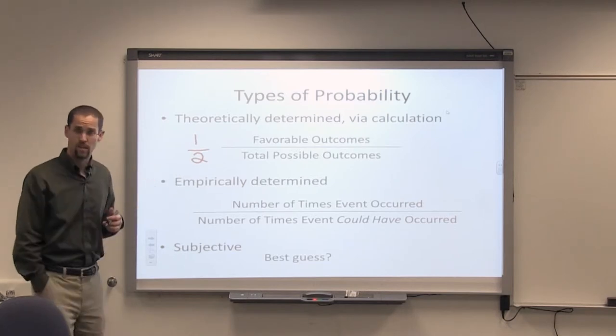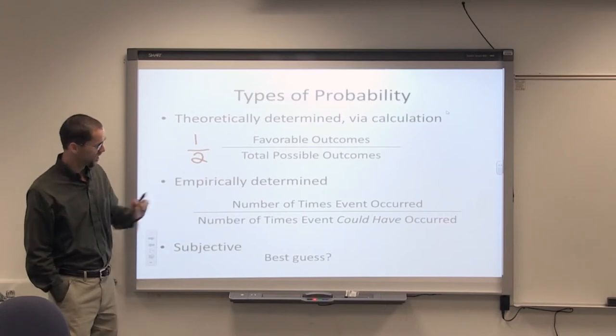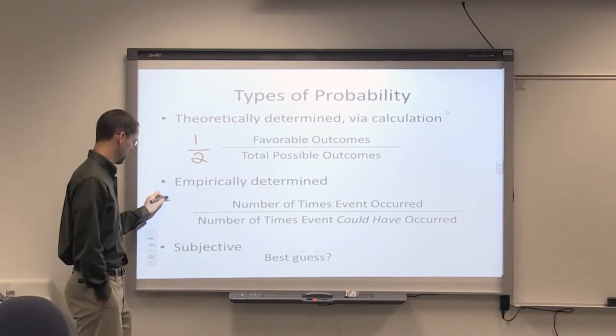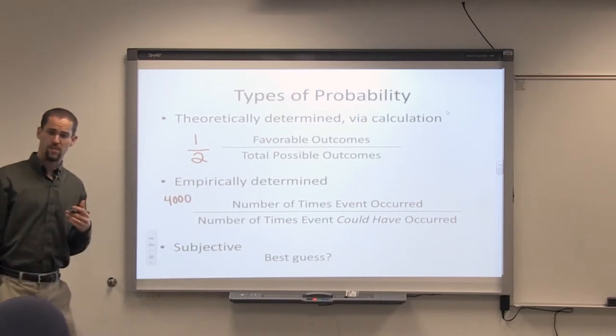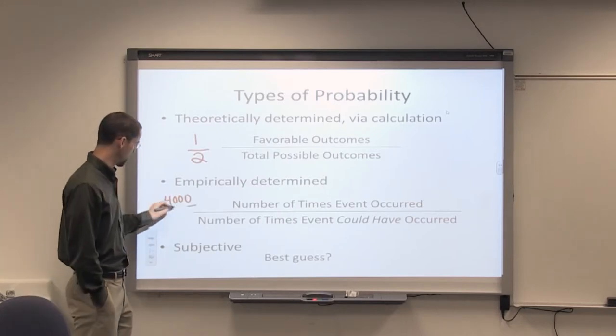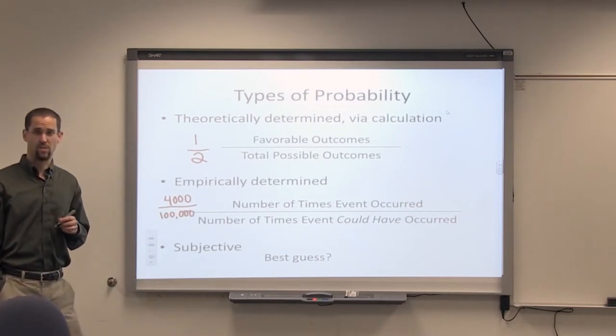Empirically determined, how many times, and these are very similar, how many times has an event occurred? How many car accidents were there? Divided by the number of times the event could have occurred. There were 100,000 drivers. So there could have been 100,000 accidents, and thank goodness there weren't.